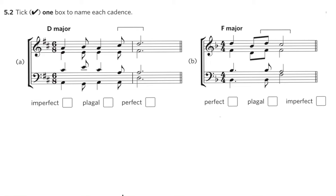A perfect cadence is chord V followed by chord I, a plagal cadence is chord IV followed by chord I, and an imperfect cadence is any chord followed by chord V.